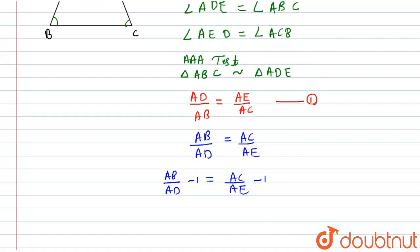Now I will make the denominator common. So here I will get AB minus AD divided by AD equals AC minus AE divided by AE.